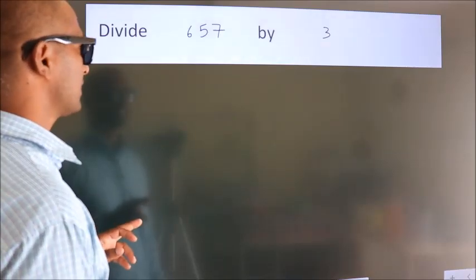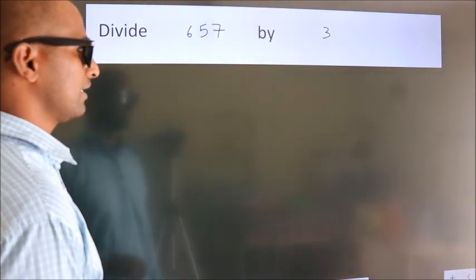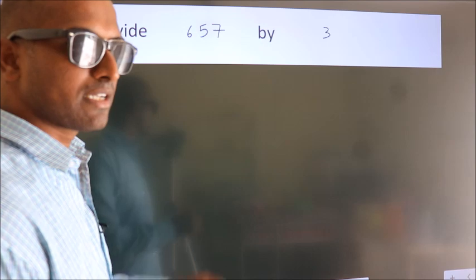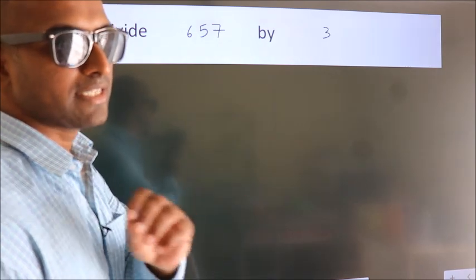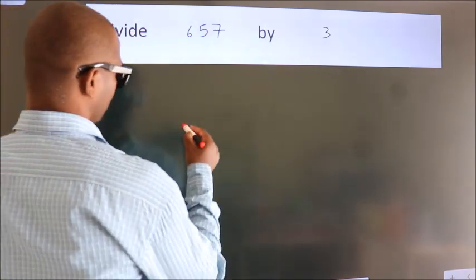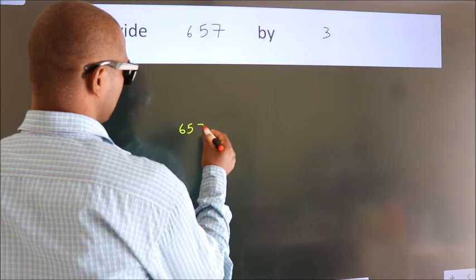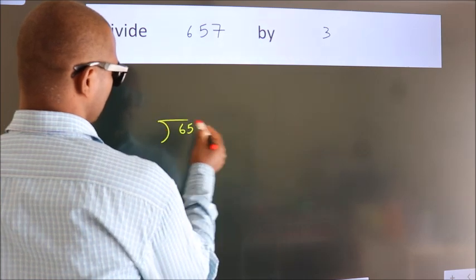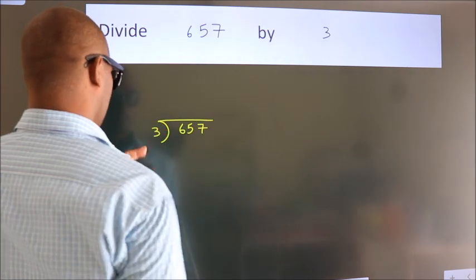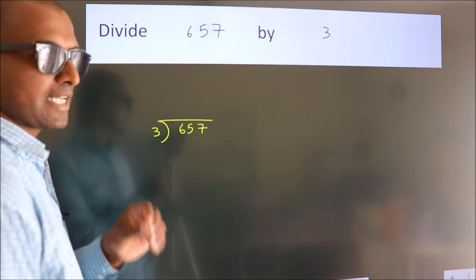Divide 657 by 3. To do this division we should frame it in this way: 657 here, 3 here. This is your step 1.